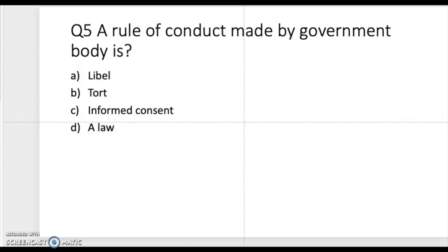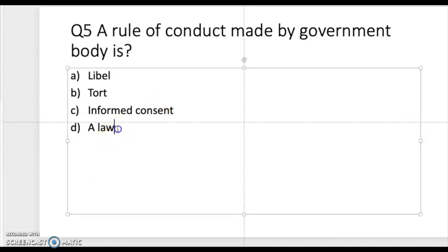Question five: a rule of conduct made by a government body is... is it libel, informed consent, or a law? The correct answer is a law. Any rule that has to do with conduct and is made by a government body has to do with laws. There are many different laws that govern conduct.